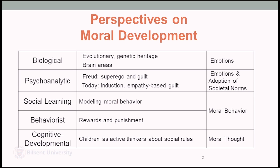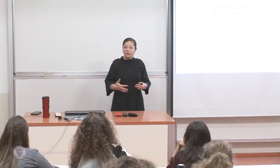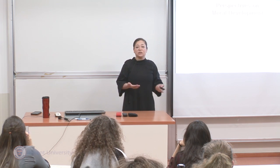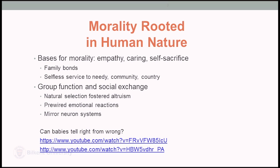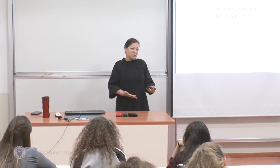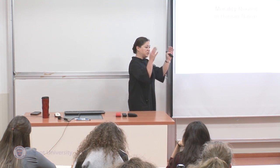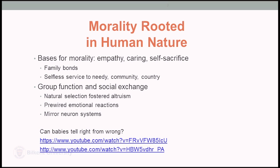Today we're going to hopefully finish psychoanalytic theory. Theories that believe moral development has evolutionary roots and a genetic heritage claim that we are born — or quickly after birth — predisposed to learn about what is good and what is bad. This has survival value in that it fosters bonds with significant people in our immediate groups, which would be our families, and it fosters empathy, caring, and when the situation calls for it, self-sacrifice.